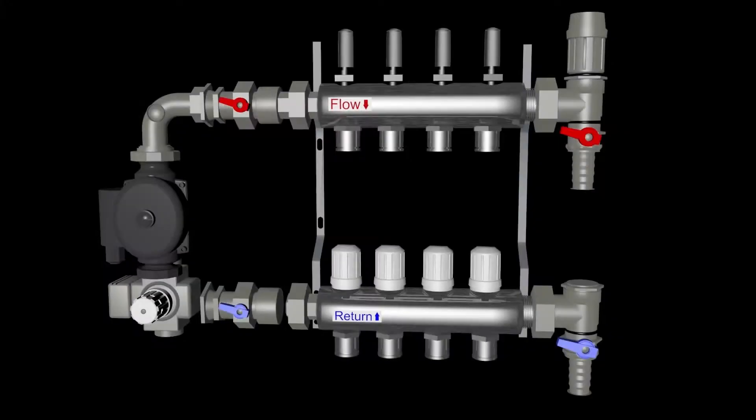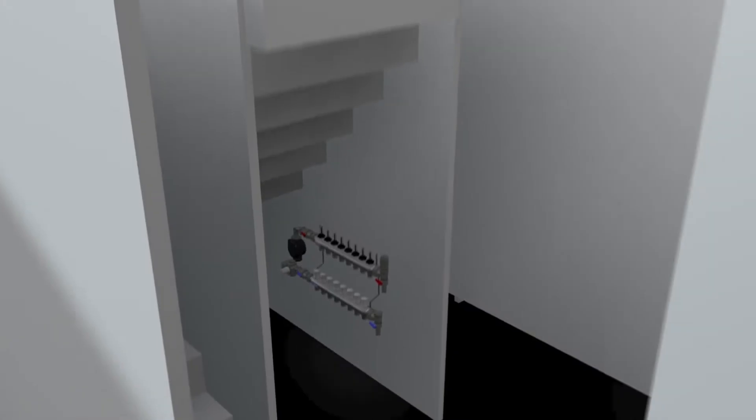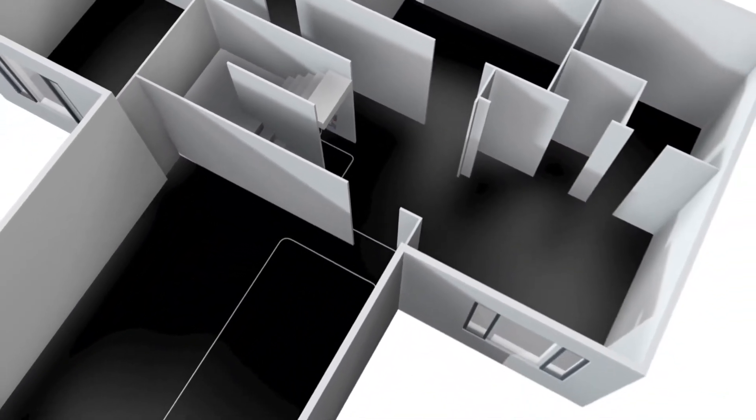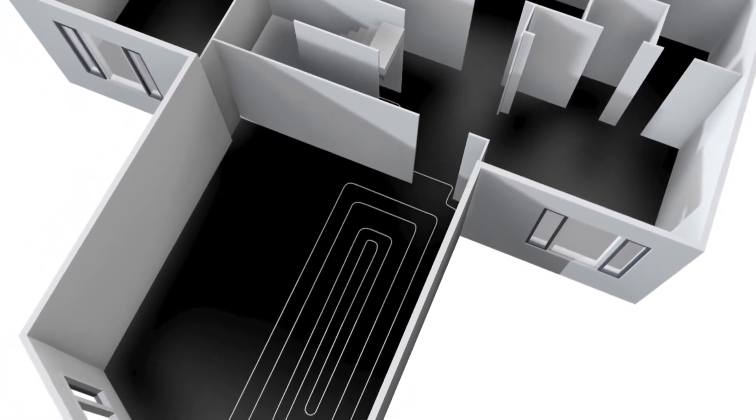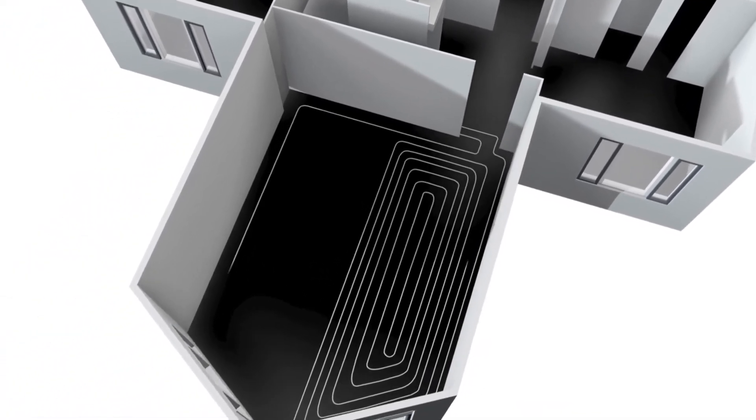Installing the manifold. The manifold performs a number of functions. Primarily, it distributes water from a central location to various rooms in the house.